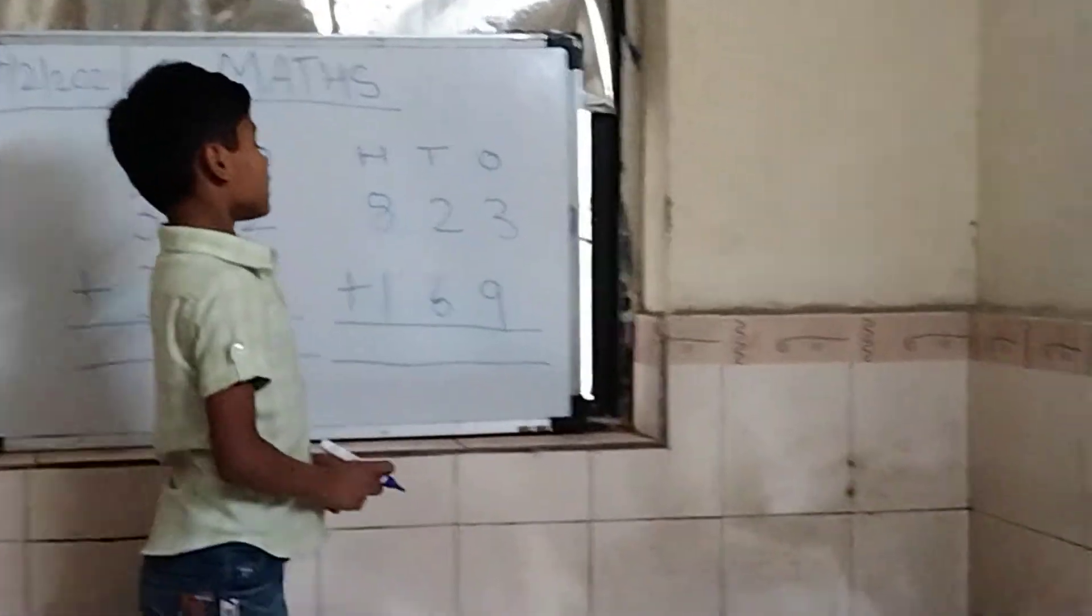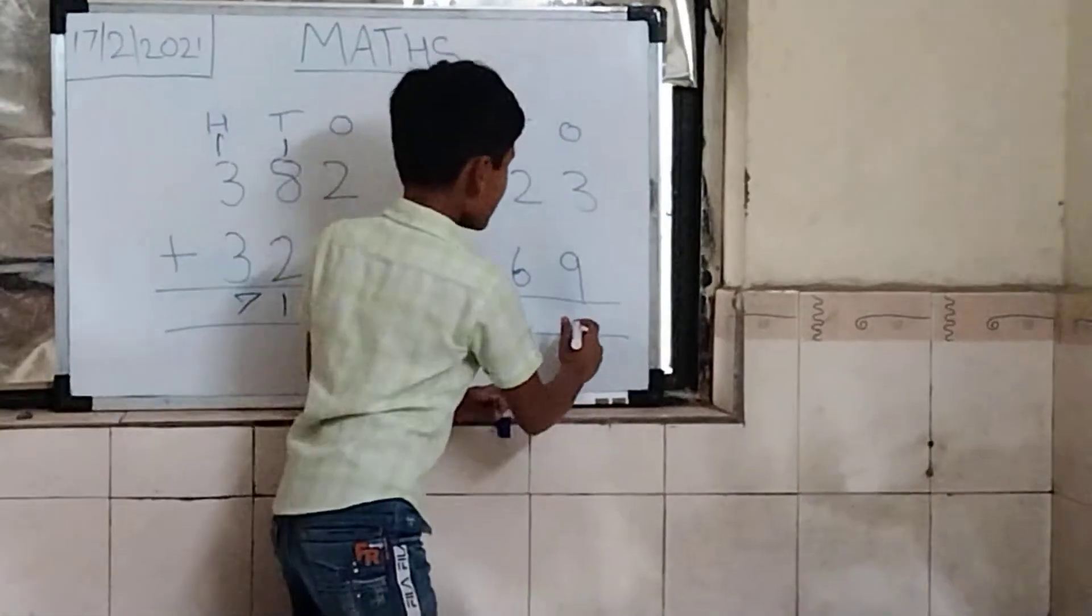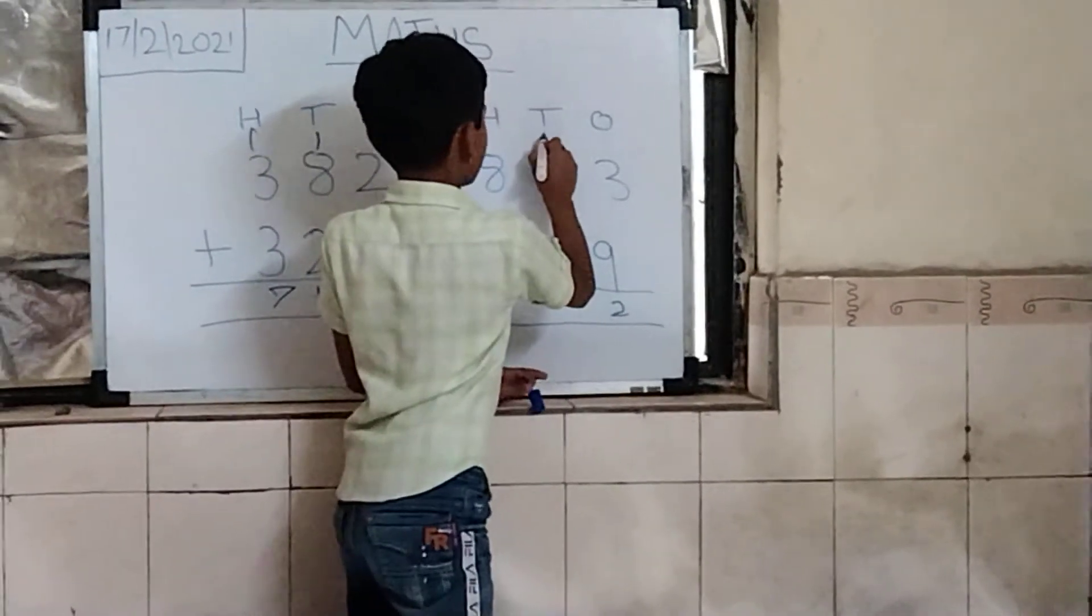Go to next sum. 3 plus 9 is 12. 2 write down and 1 write up.